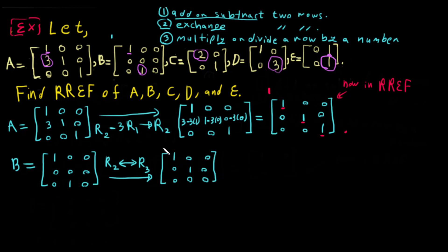After swapping, matrix B becomes: 1, 0, 0 / 0, 1, 0 / 0, 0, 0. Now it's in RREF. To verify: here is 1, go below then right to find 1, go below then right to find 1 — but there is no third 1, which is fine.